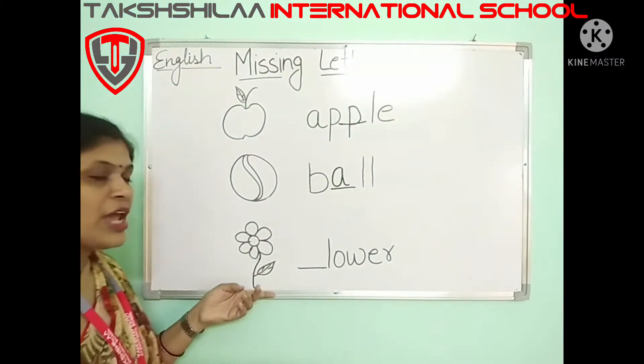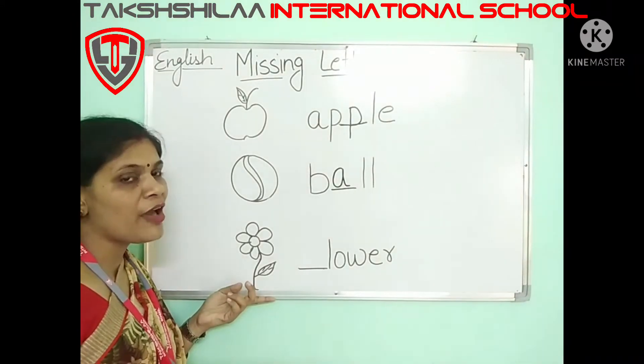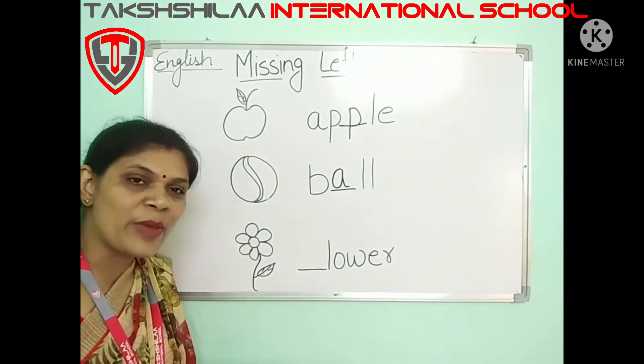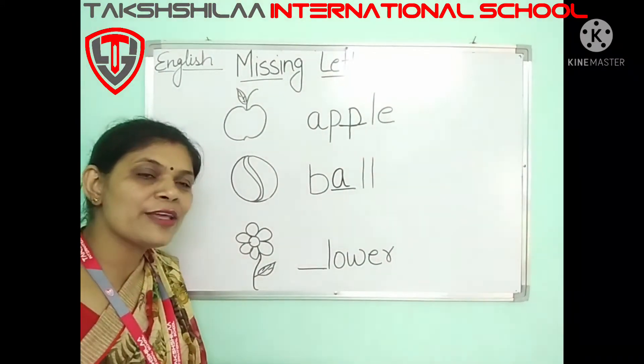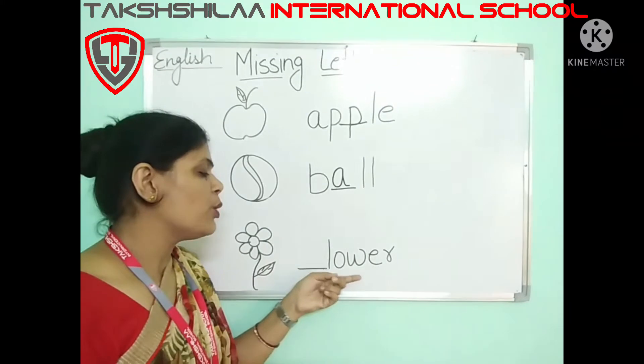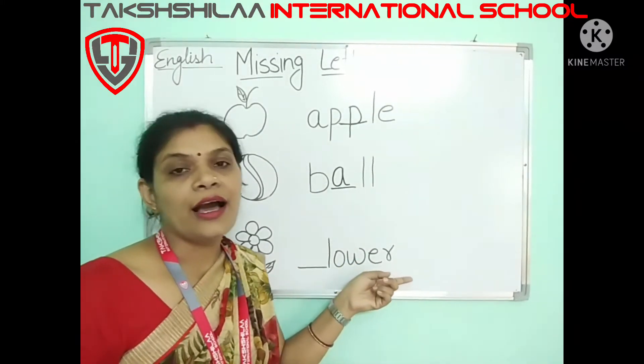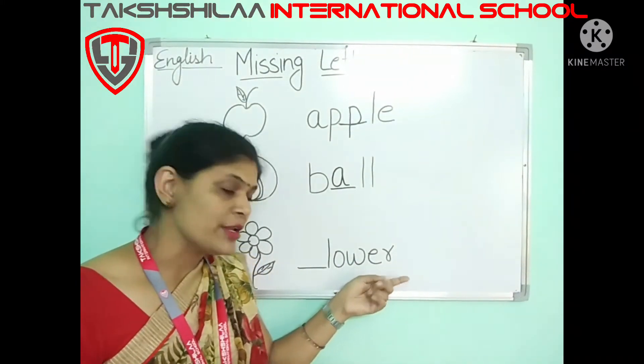Now, last one is flower. And what is the spelling of flower? F, L, O, W, E, R — flower.